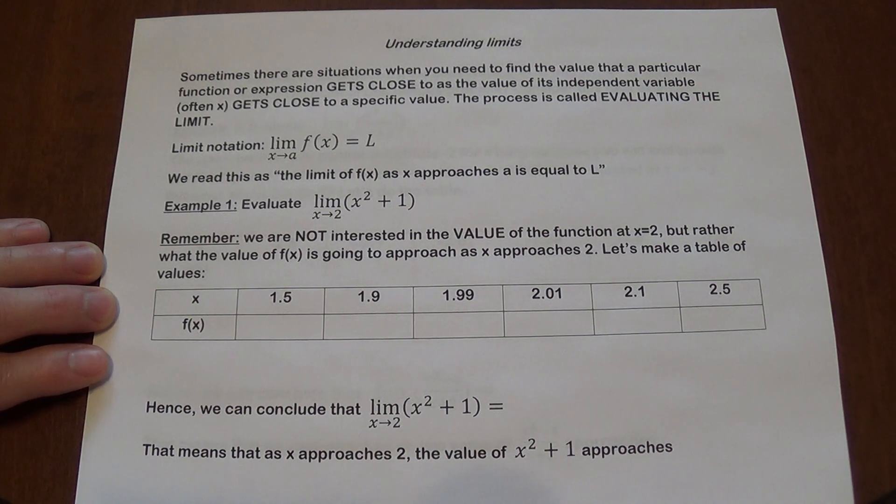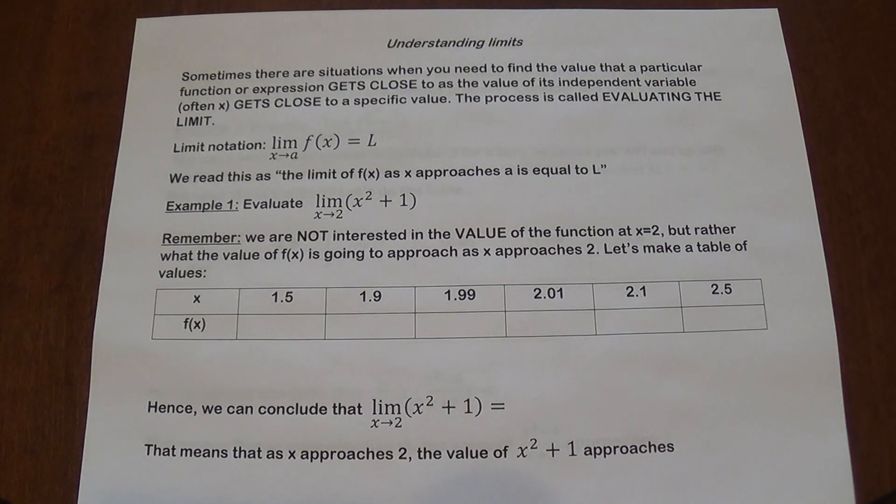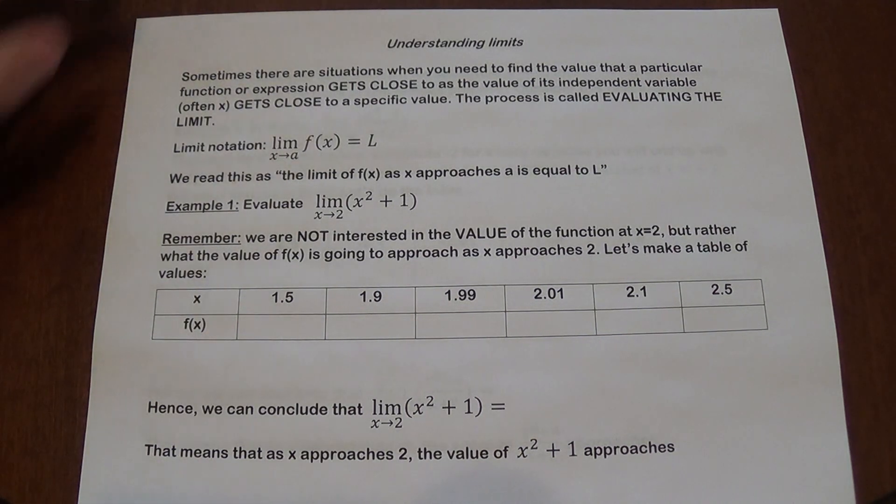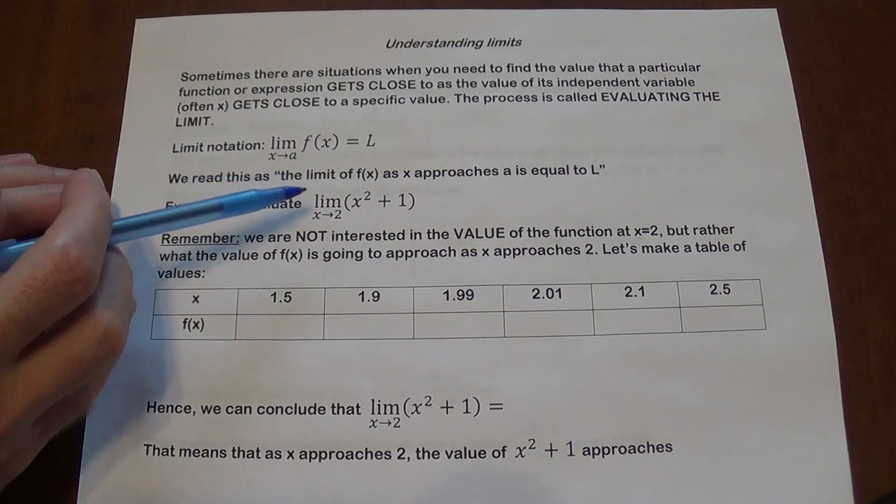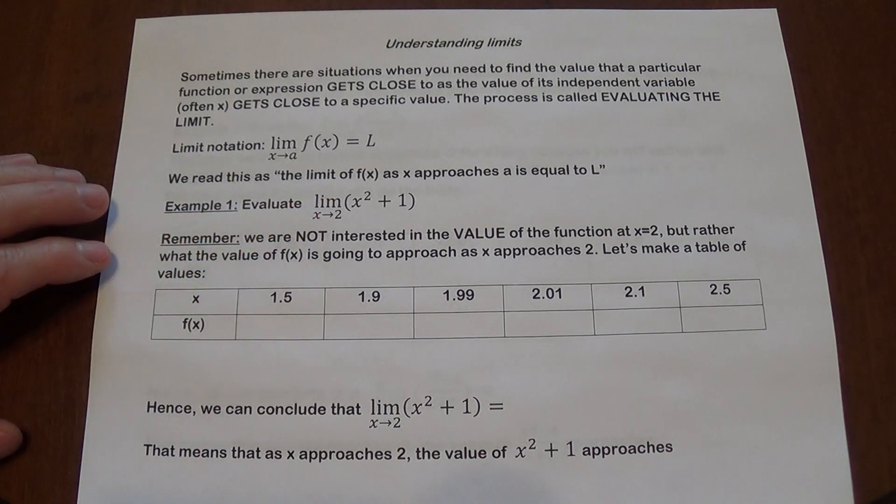So let's consider this first example. We're going to use tables to make sure we understand what is happening here. So the first limit we need to evaluate is the limit as x approaches 2 of x squared plus 1. We're not trying to plug in 2 into the function. We're trying to see as we get closer to 2 what's happening with this expression.